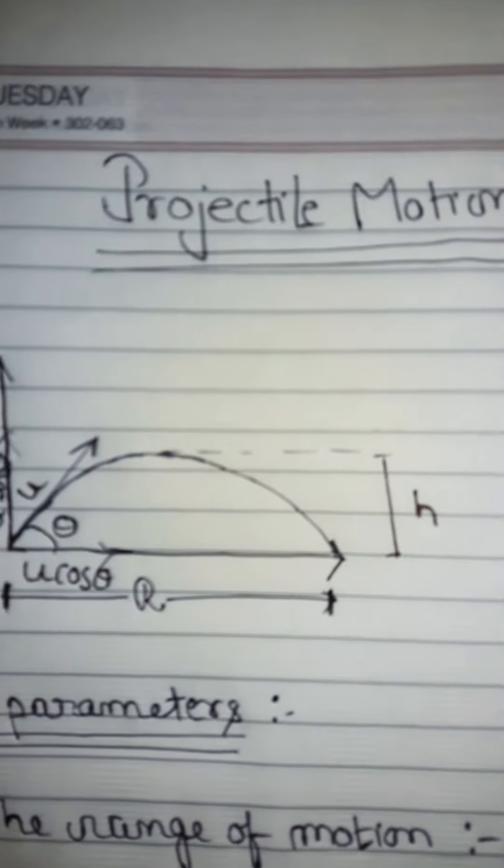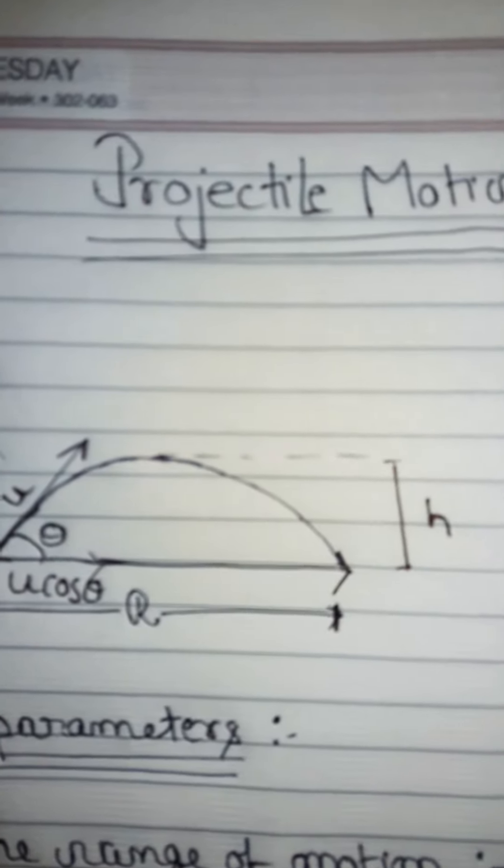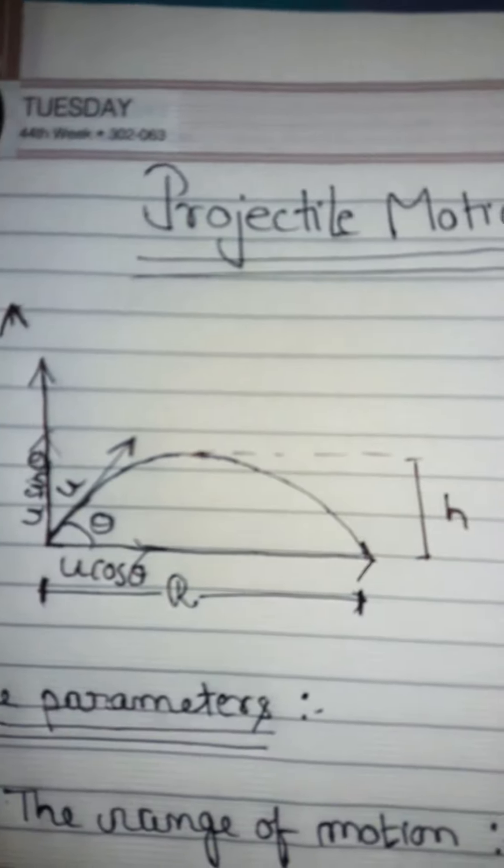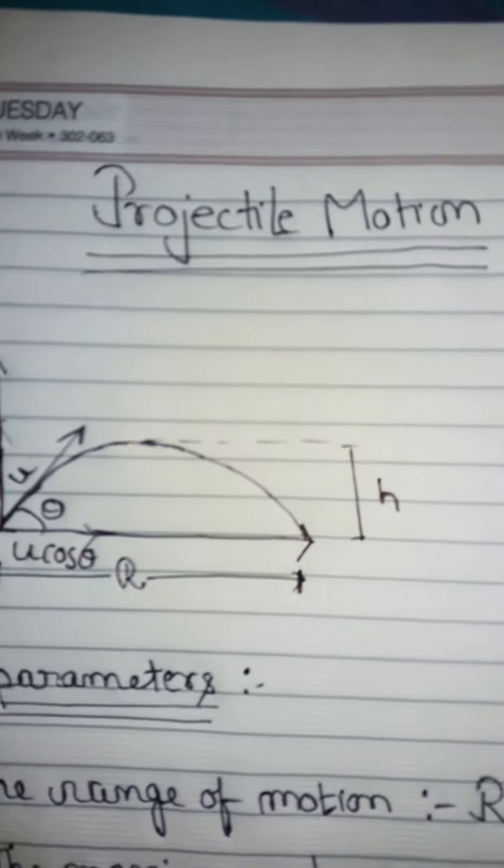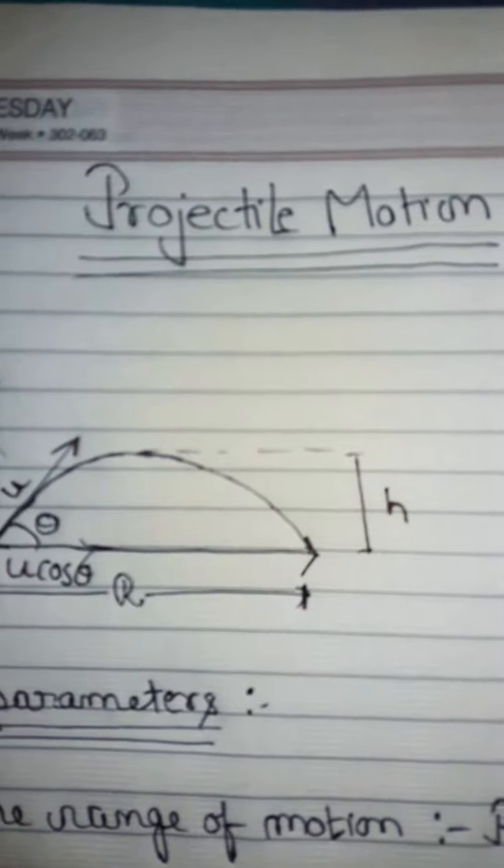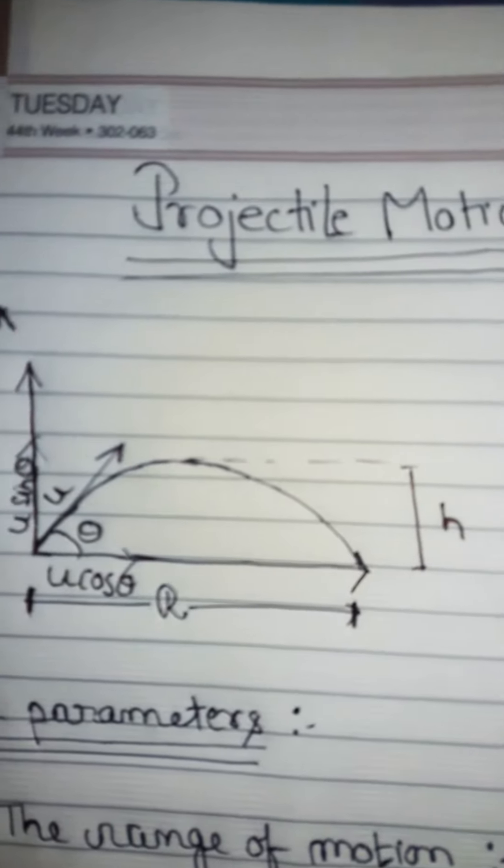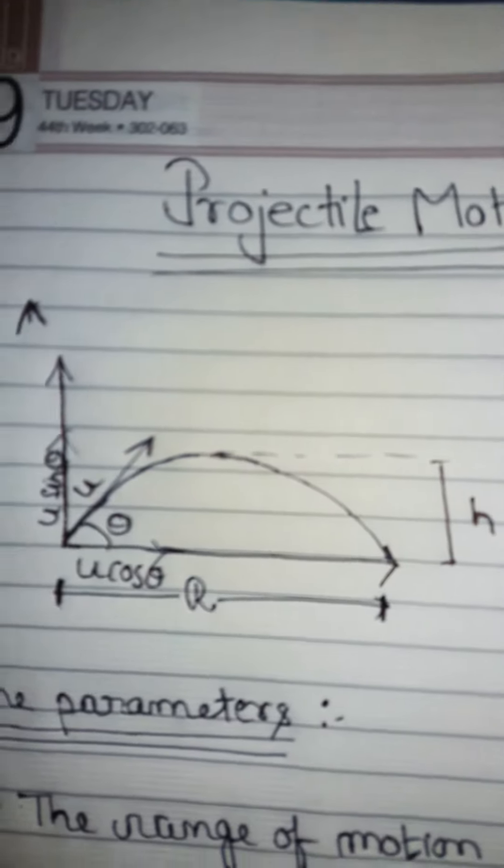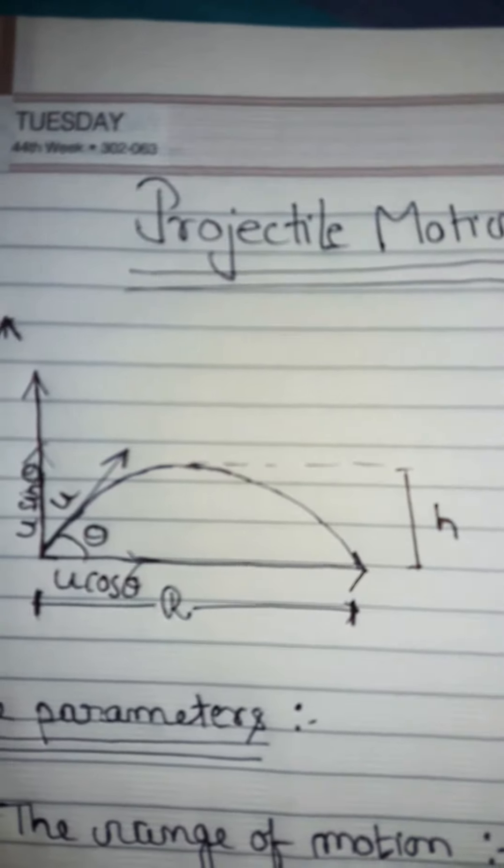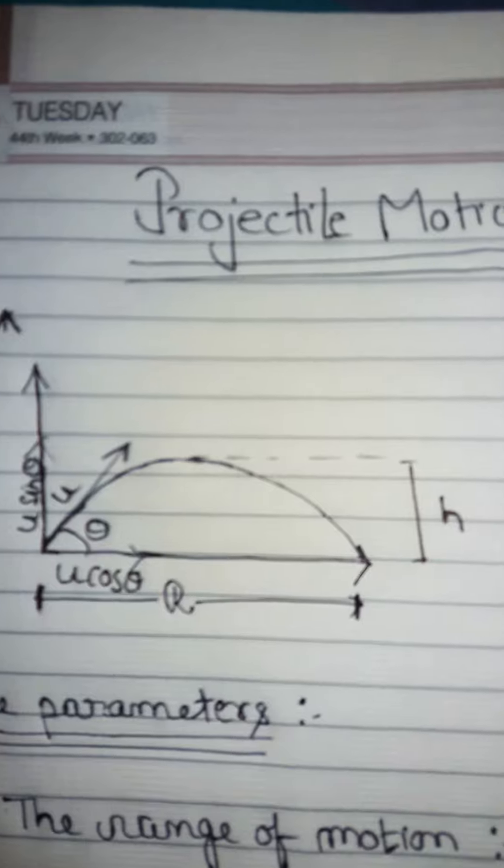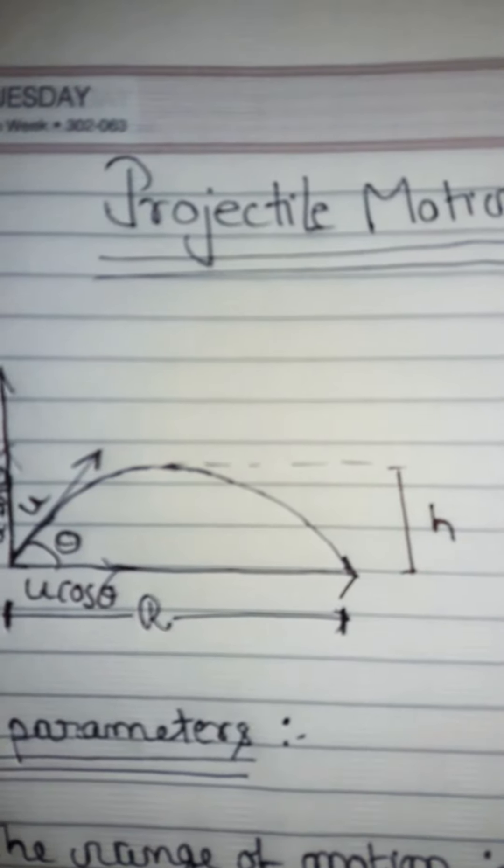So without further ado, let's get started. The 2D vertical plane motion is also known as projectile motion. Now, projectile motion can be of different types, for example, the projectile motion on a horizontal plane...